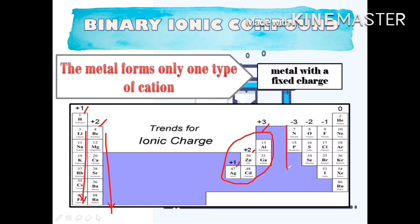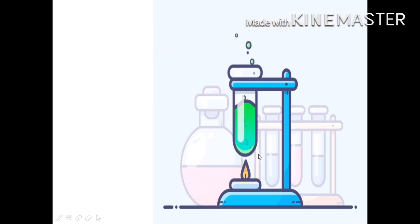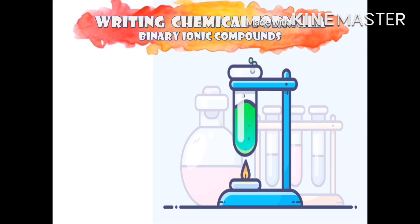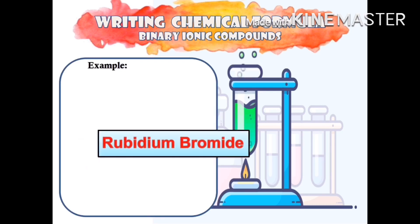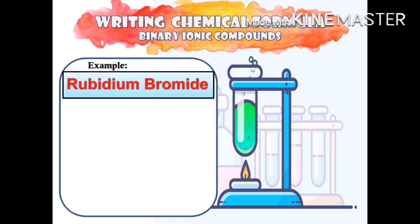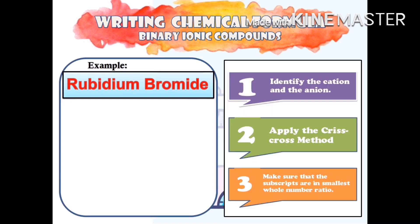You can also see the non-metal anions that are usually paired with our metal cations, and their corresponding charges: 3 minus, 2 minus, and 1 minus. Let us start writing the chemical formula for binary ionic compounds with this example: rubidium bromide. To correctly write the formula of this compound, we need to follow three steps.